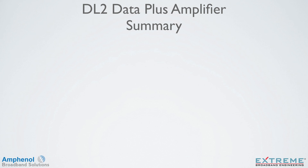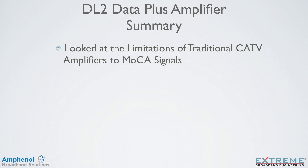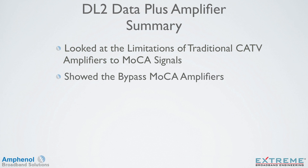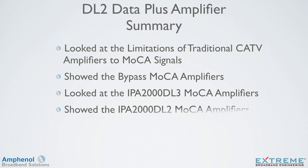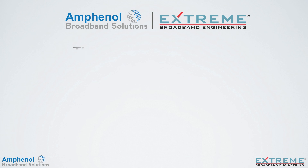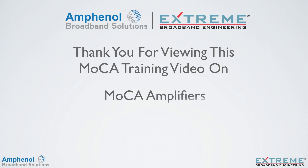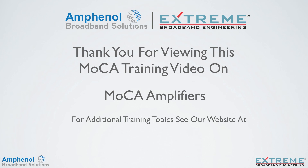Let's review what we've covered in this training on MoCA amplifiers. We looked at the limitations of traditional cable TV amplifiers to MoCA signals, showed the bypass MoCA amplifier and its benefits, showed the IPA2000DL3 MoCA amplifier with crosstalk which allows MoCA communications between all RF output ports, and showed the IPA2000DL2 MoCA amplifier with crosstalk and datacom which allows MoCA communications between the data port and all RF output ports. Thank you for viewing this product training on MoCA amplifiers. For additional training topics, see our website at www.amphenolbroadband.com.